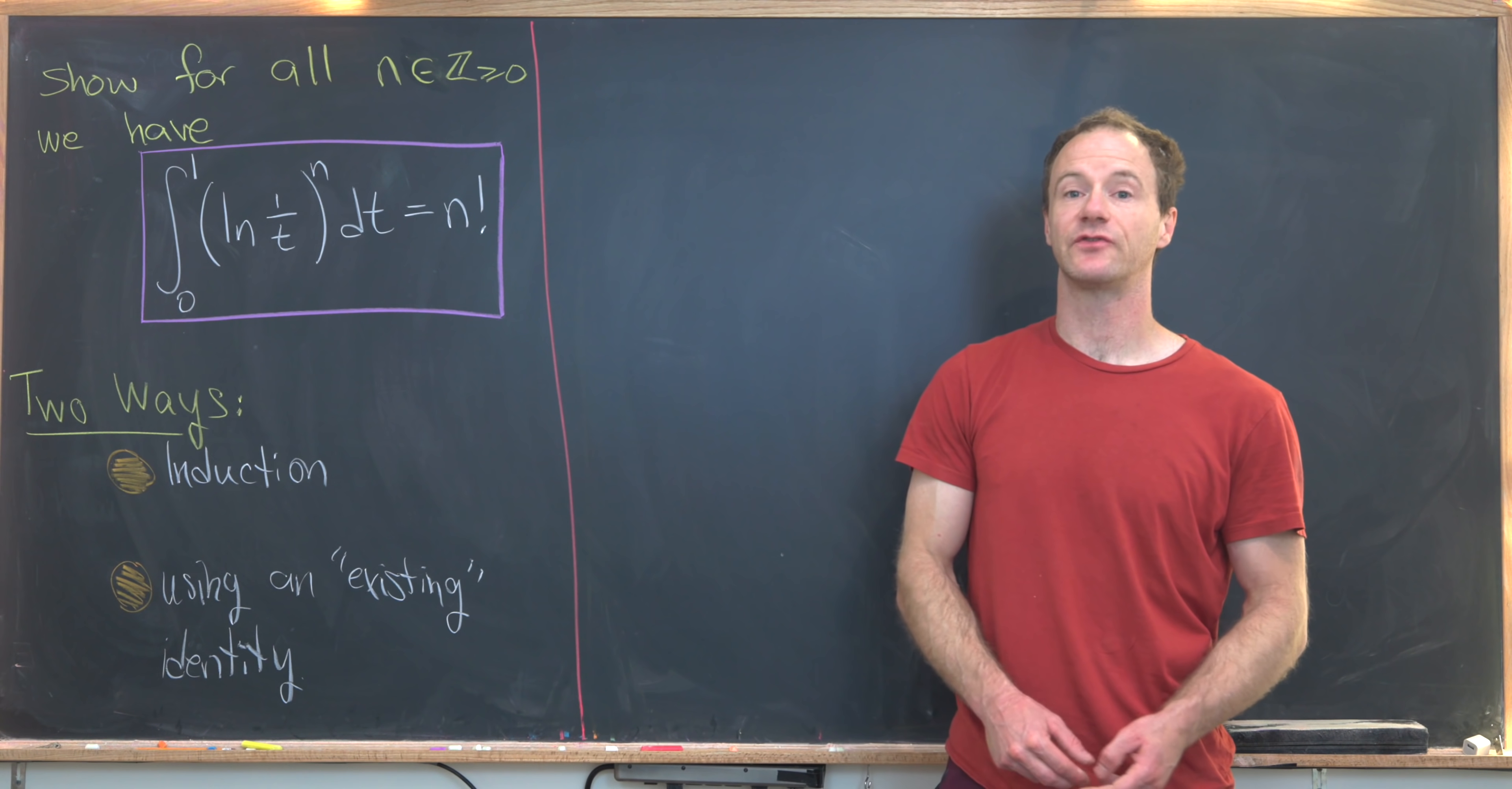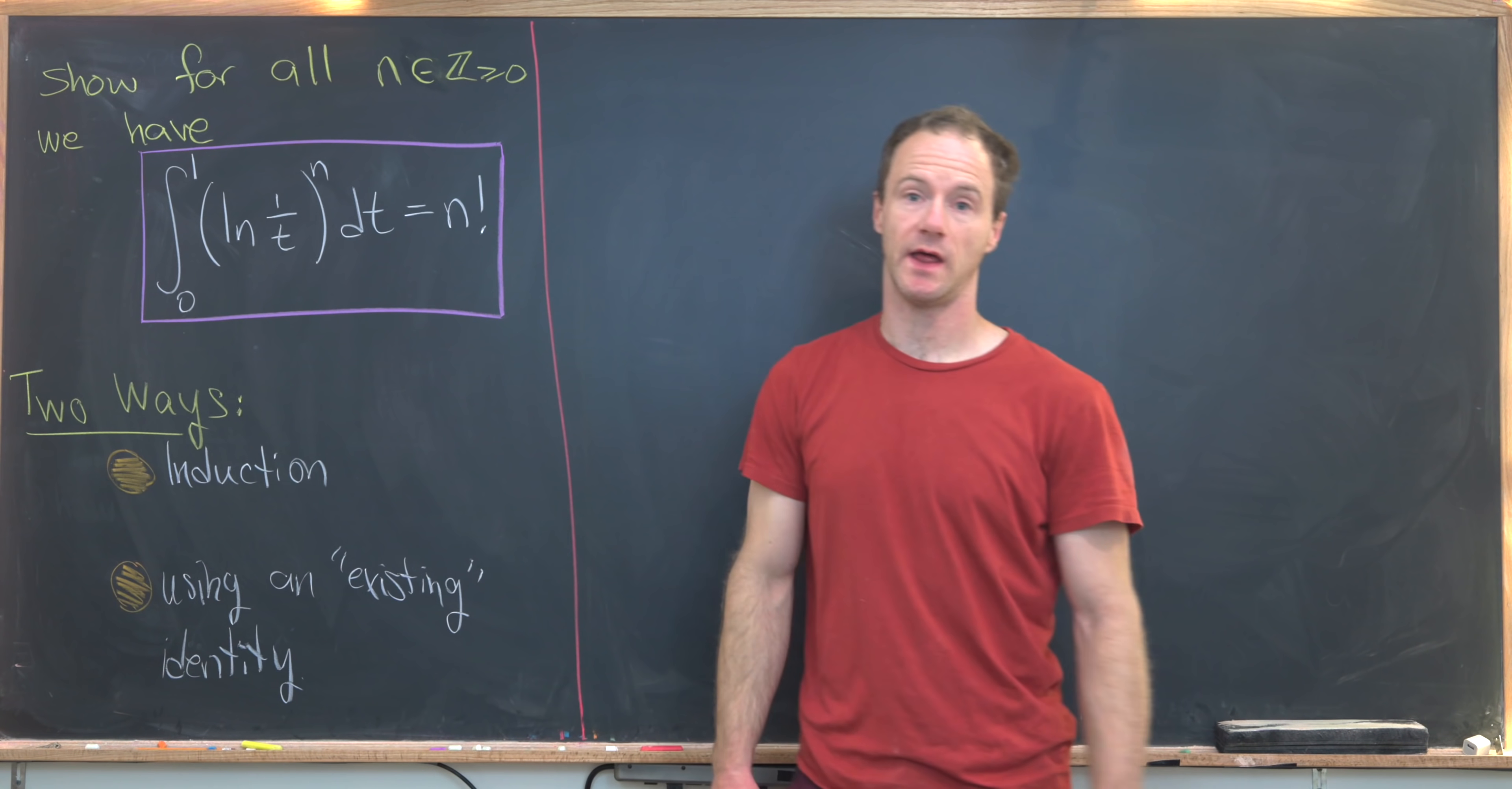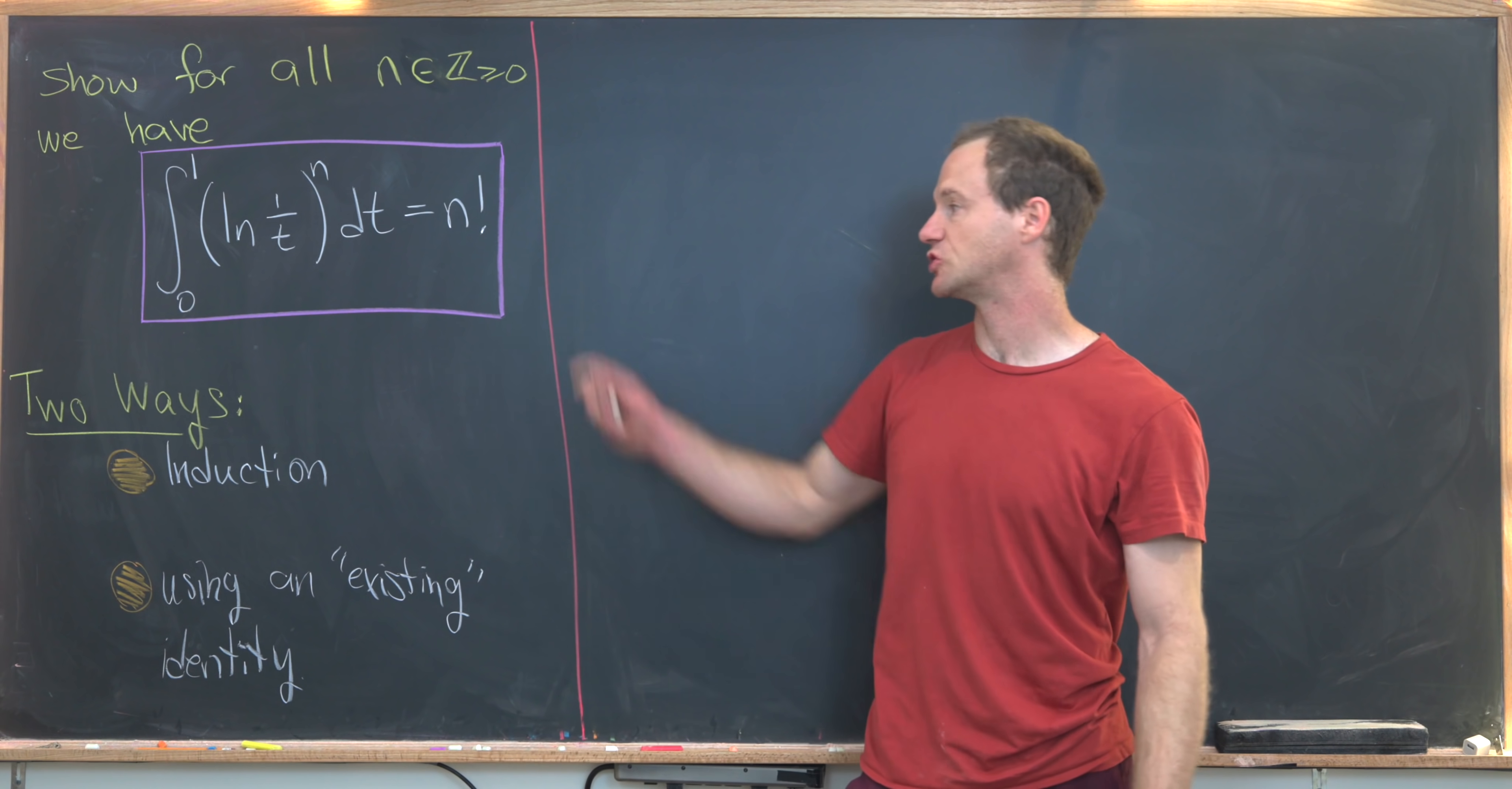I've got a nice and exciting integral identity to show everyone today. Our goal is to show for all non-negative integers that the integral from 0 to 1 of the natural log of 1 over t raised to the nth power is equal to n factorial.